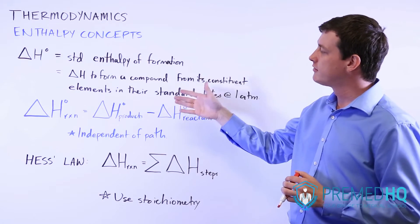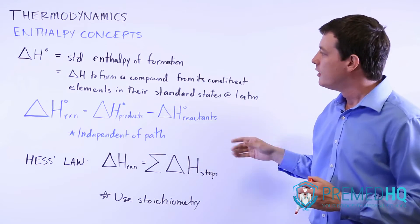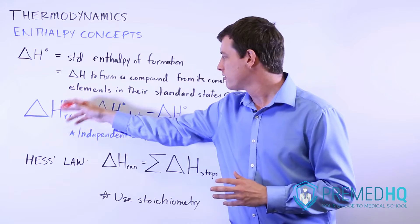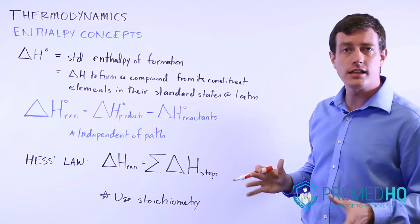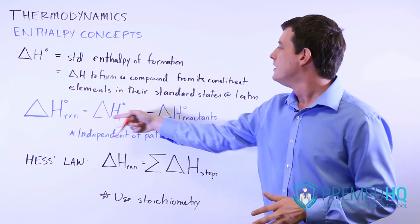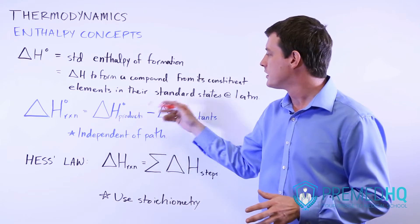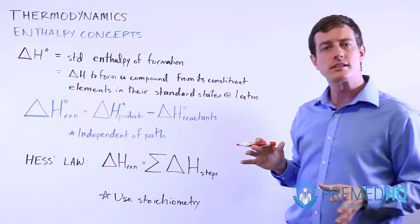The standard enthalpy of formation can then be used to derive this formula here which says that the change in enthalpy of a reaction, or the change in the standard enthalpy of a reaction, can be calculated by just looking at the difference between all of the delta H standards of the products and subtracting from that the standard enthalpy of forming those reactants.